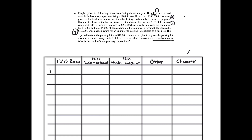Before we put that down in the main hodgepot, we have a new consideration: Section 1245. Section 1245 applies to personal property that's been depreciable or amortizable, and also only to gains. We have neither of those here — this is real property. A factory is real property. Also, it's a loss. So Section 1245 does not apply. We're safe to put down the $20,000 loss in the main hodgepot. We'll come back later and net the main hodgepot to determine the actual end result.